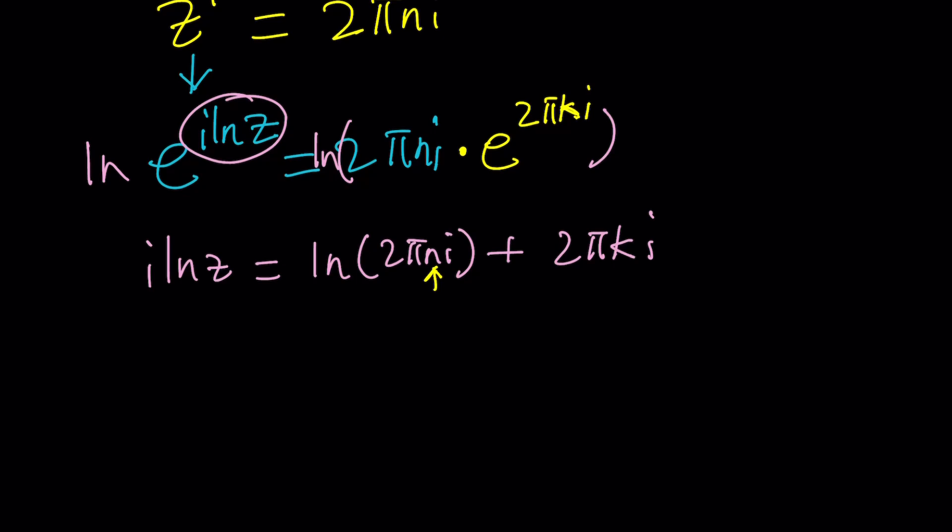First of all, I do need to find ln 2 pi n i. What is the natural log of a complex number? Which can be written as r e to the i theta. Or should I say absolute value of z. I think this is more practical. ln r e to the i theta becomes ln r, which is a real logarithm, plus i theta. So that's the formula we're going to use.